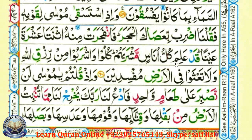قَدْ عَلِمَ — The دَال has a Qalqalah because it is one of the Qutbu Jadin letters and it has a Sukoon on top. قَدْ عَلِمَ